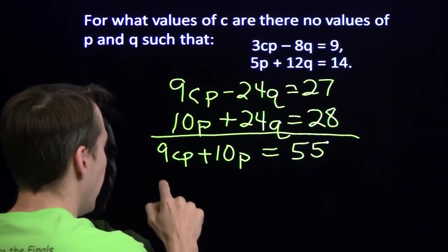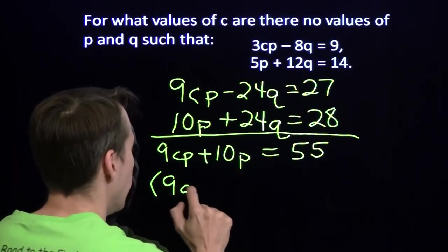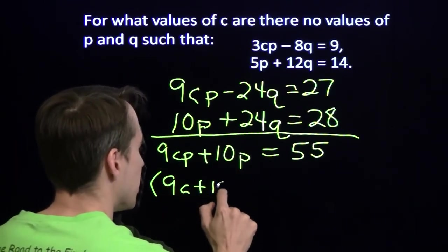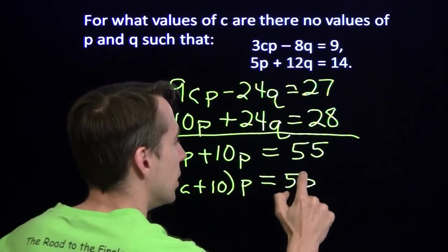Now, here we can factor out the p. Now, if this were just 9p plus 10p, you'd have 9 plus 10p. Well, here we have 9c plus 10. That whole thing times p is 55.